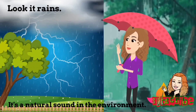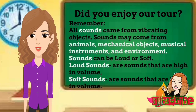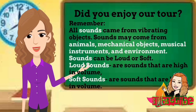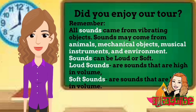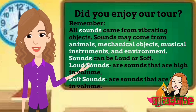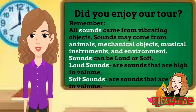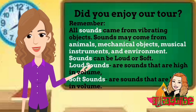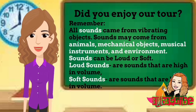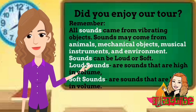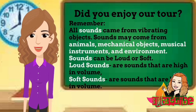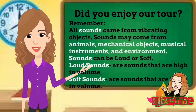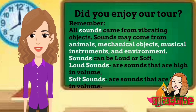Oh, it's thunder! Did you enjoy our tour? Remember, all sounds came from vibrating objects. Sounds may come from animals, mechanical objects, musical instruments, and the environment. Sounds can be loud or soft. Loud sounds are sounds that are high in volume, and soft sounds are sounds that are low in volume.